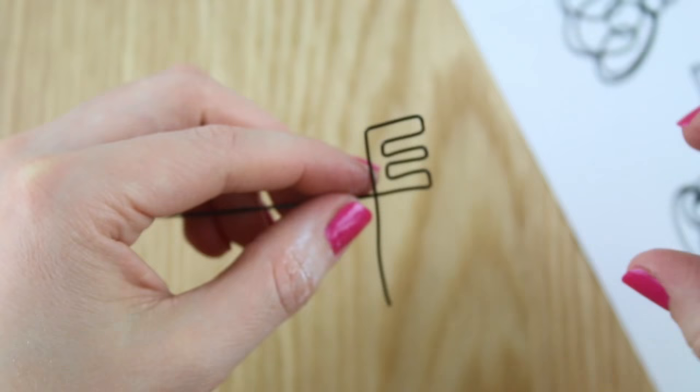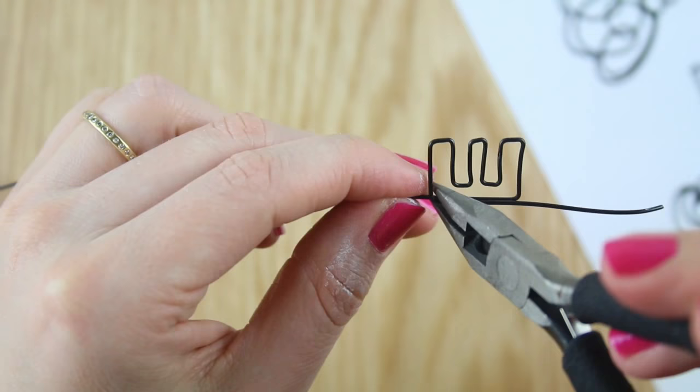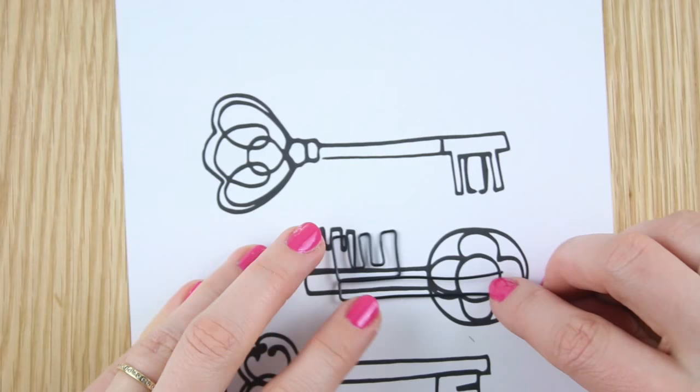Take the wire down to make the other end of the bit section and back along the stem. This will create a double line. Use the pliers to make further right angles and complete the rectangle of the stem.